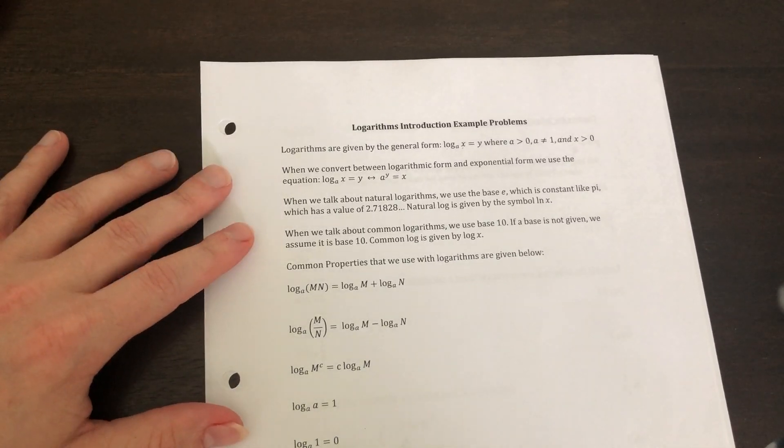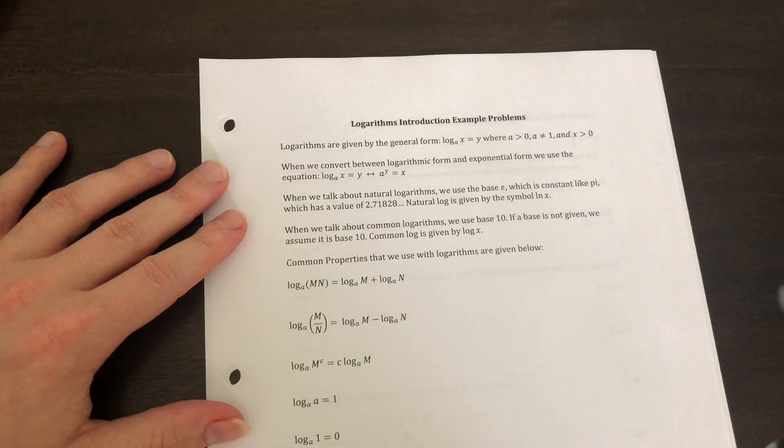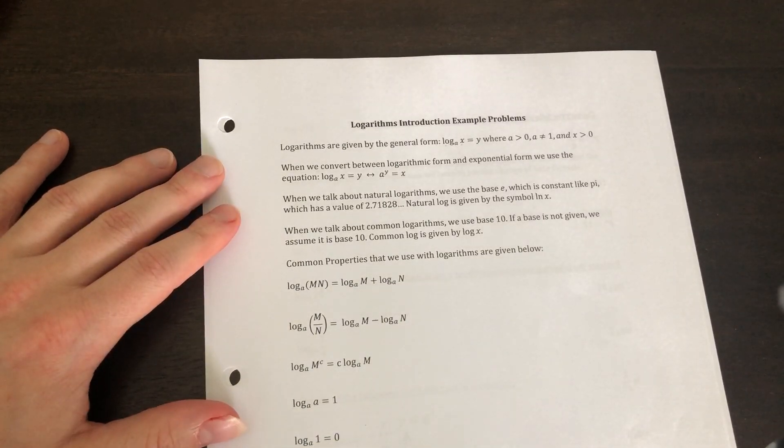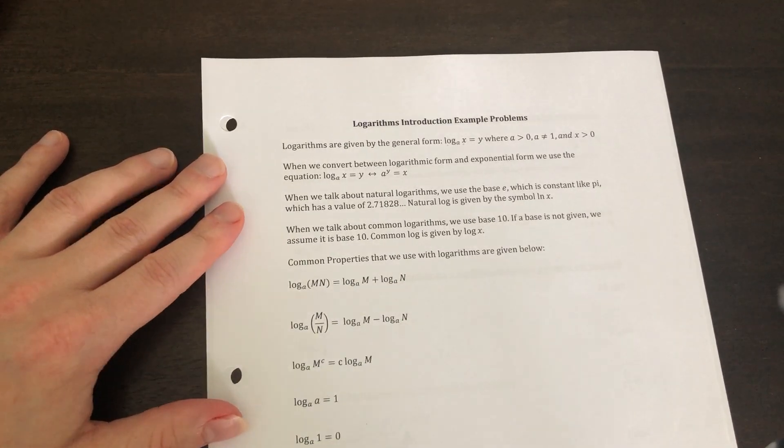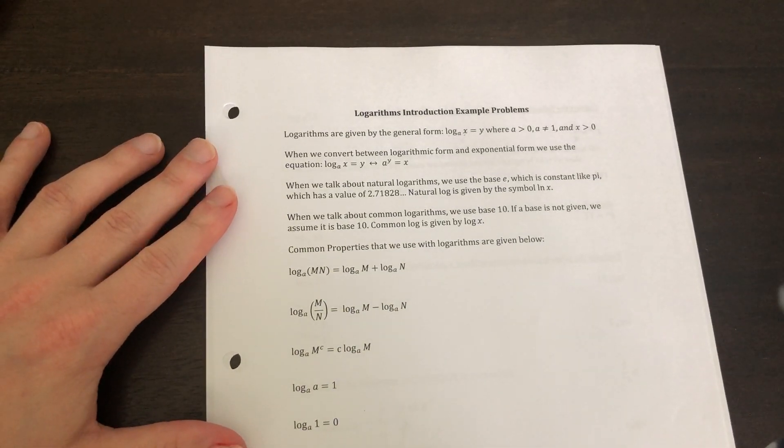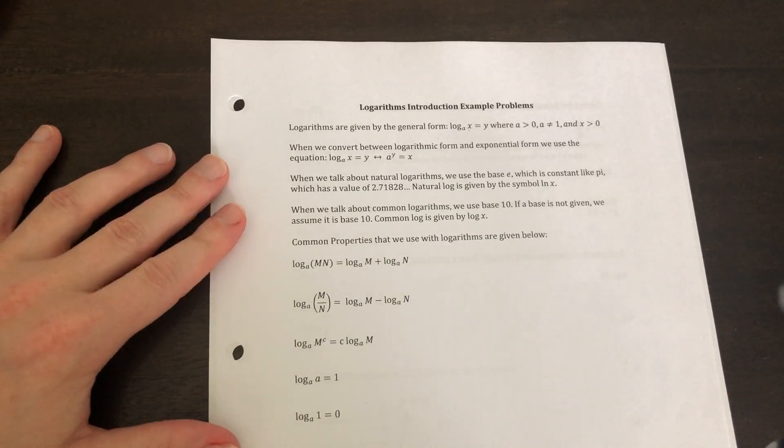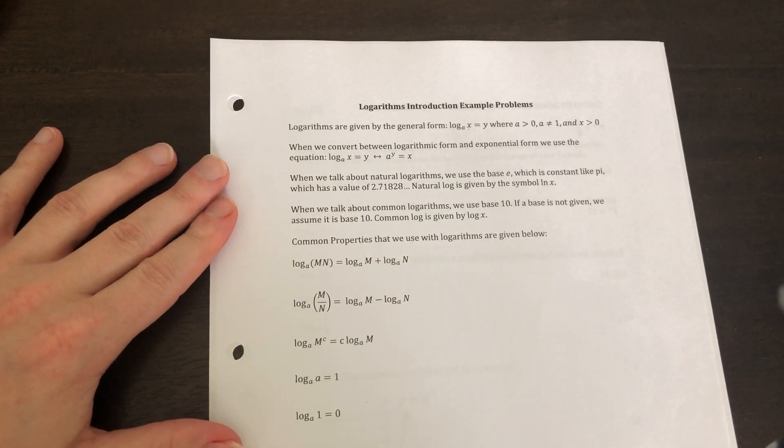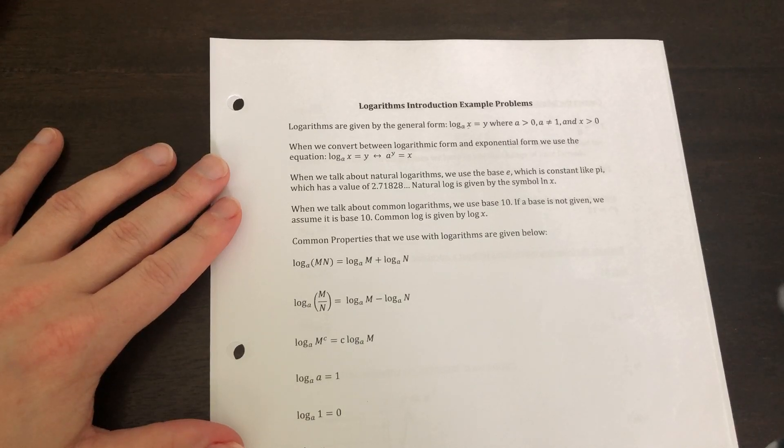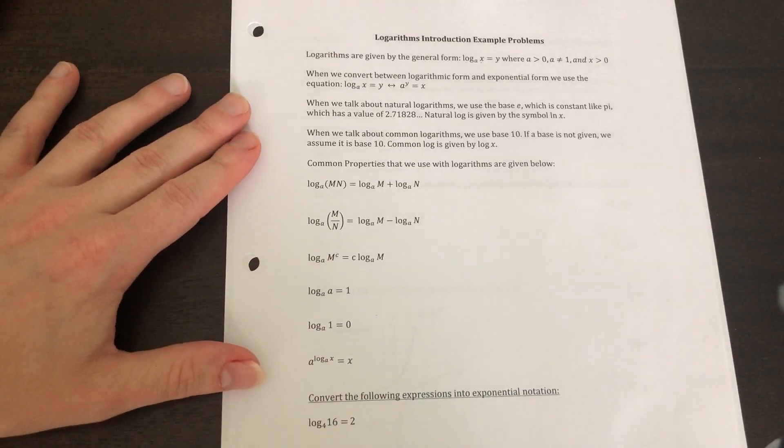It's still the same rules, just base e. When we talk about common logs, we use base 10. If a base is not given, we assume that it is base 10. A common log is written as log of x. The only logs on your calculator that you're able to use are natural log and log. I'm going to show you later in this lesson how to evaluate stuff that isn't in those bases.